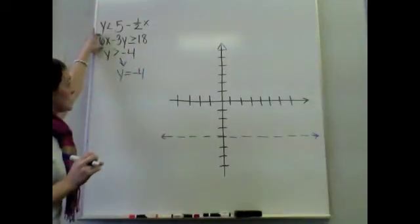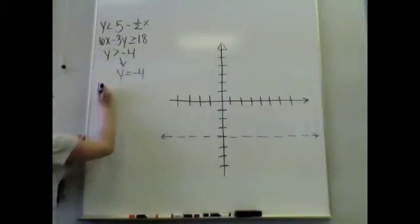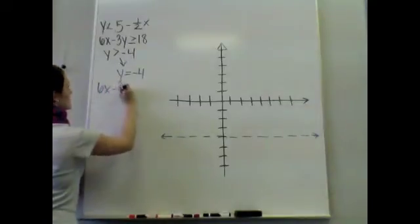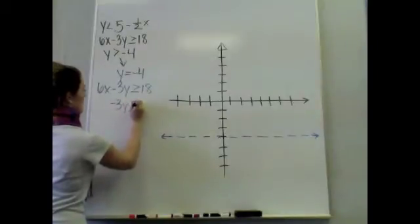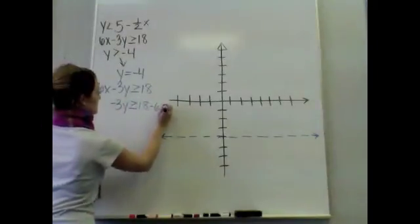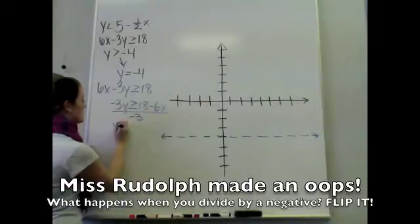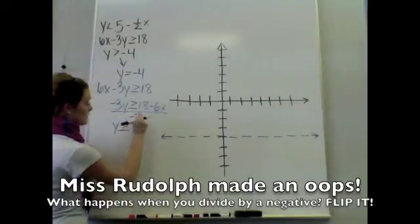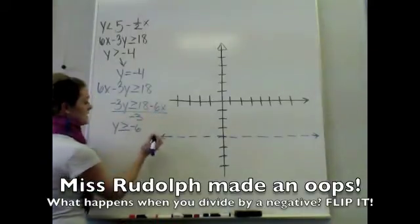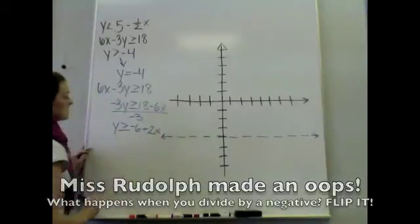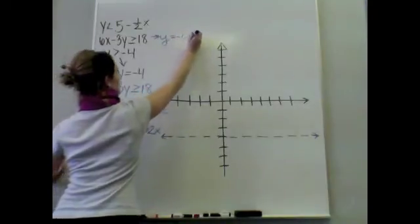The second equation is not in slope-intercept form, so I'm going to need to adjust it. We have 6x minus 3y is greater than or equal to 18. So let's bring the 6x over to the other side. I have 18 minus 6x, and we divide everything by negative 3, leaving me with y is greater than or equal to negative 6 plus 2x.